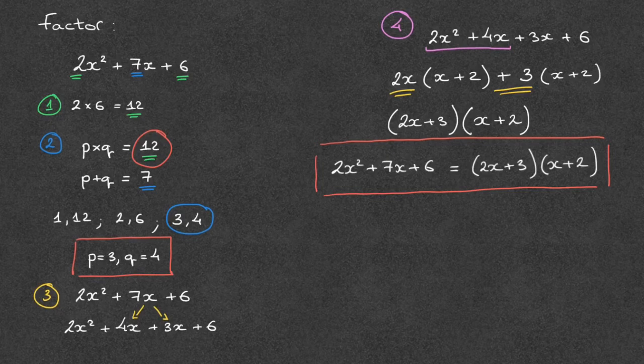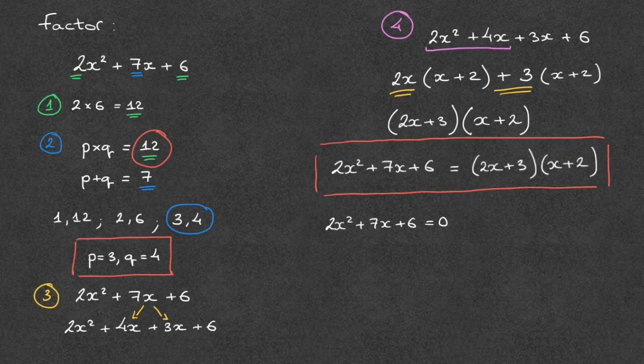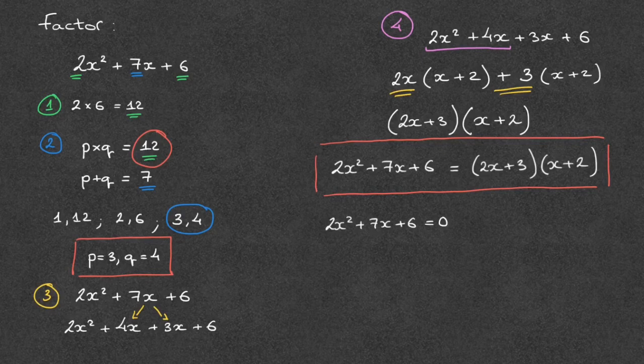Let's say we were asked to solve the equation 2x squared plus 7x plus 6 equals 0. This is a typical quadratic equation, and we may be tempted to solve it using the quadratic formula. But we could also solve this equation by factoring it.